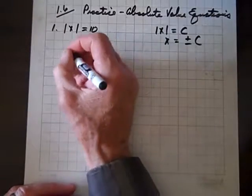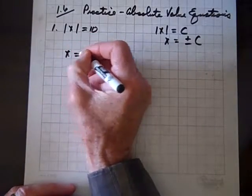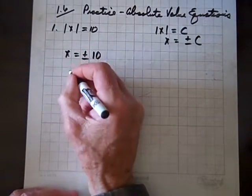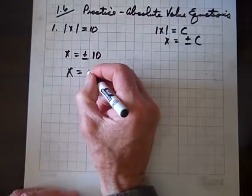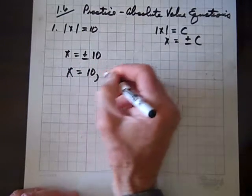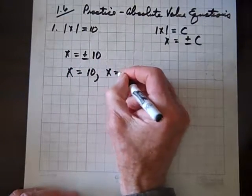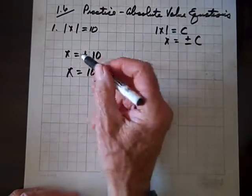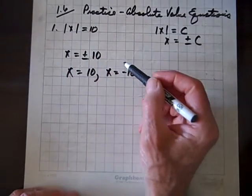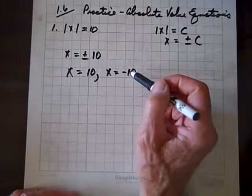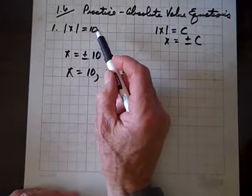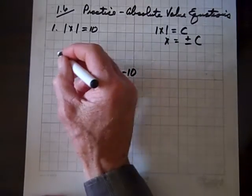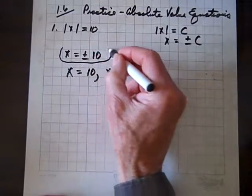So therefore, x equals plus or minus 10. That means x equals 10 or x equals negative 10. Replacing x between the absolute value bars with either 10 or negative 10 will both yield 10. So here's the more concise way to write the solution.